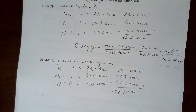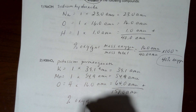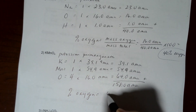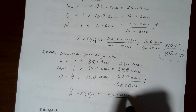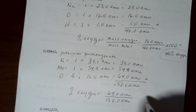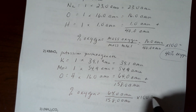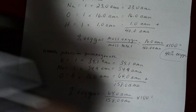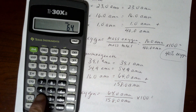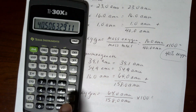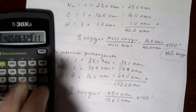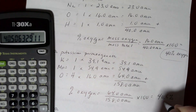Our job now is to find percent oxygen. The mass of the oxygen is 64.0 amu and the total mass is 158.0 amu. Multiplying by 100: 64 divided by 158 times 100, and rounding to the nearest tenth, we get 40.5 percent oxygen.